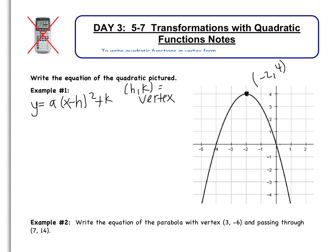which is negative 2 comma 4. So I'm going to substitute that into my equation. So I have y equals a(x subtract negative 2) squared add 4. Simplifying, this is y equals a(x add 2) squared add 4.